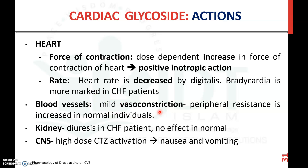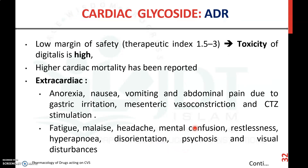In blood vessels, cardiac glycosides produce mild vasoconstriction, so peripheral resistance is increased in normal individuals. In the kidney, digitalis produces diuresis in CHF patients but has no effect in normal patients. In the CNS, at higher doses, they trigger the chemoreceptor trigger zone and may cause nausea and vomiting.